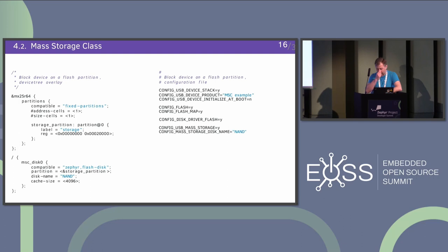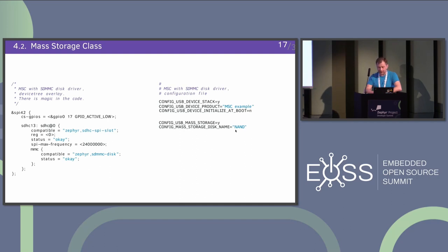Another example is using SDMMC, which is very magic. On the Kconfig side, you just configure USB and enable mass storage class. But in the current state of the tree, you don't need to enable anything in Kconfig for the MMC driver — it's magically enabled just by the device tree compatibility. That's kind of an issue we need to fix, because the user looks at what Kconfig options to enable and doesn't see why it just works — the node is not visible in Kconfig.